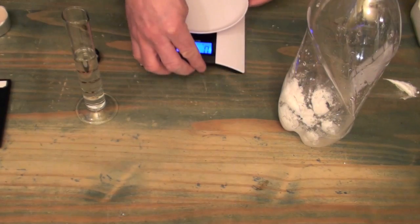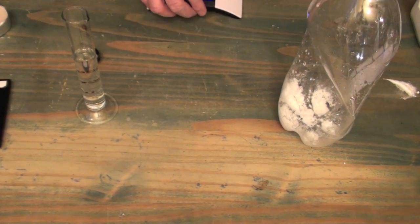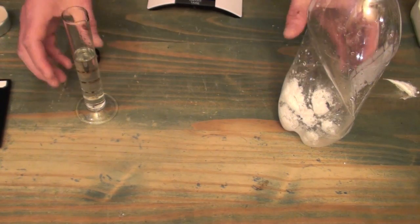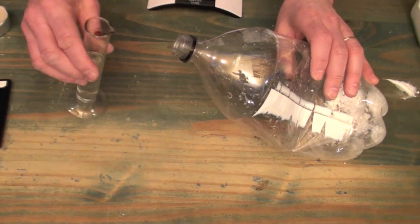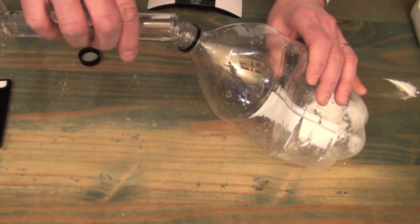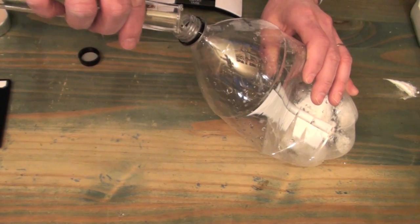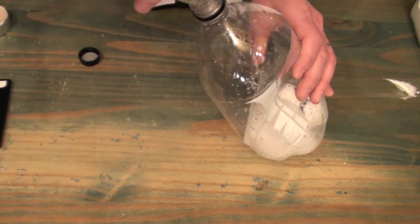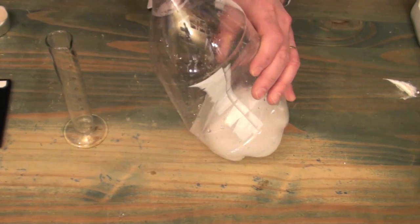So we'll take our scale out of the way and now we'll take our vinegar and pour it into the bottle. And as soon as we have this poured in we're going to very quickly cap the reaction.